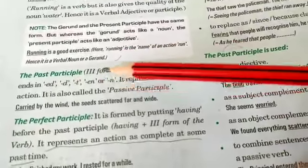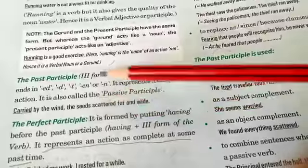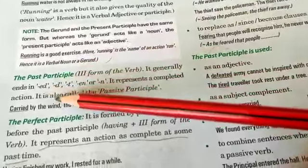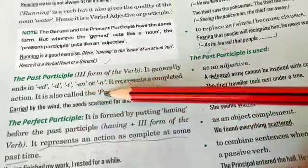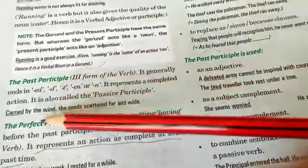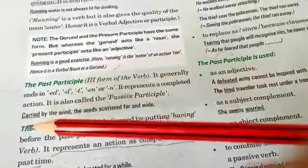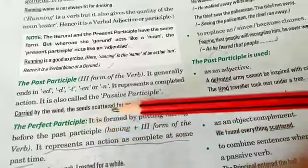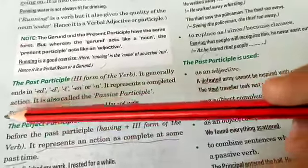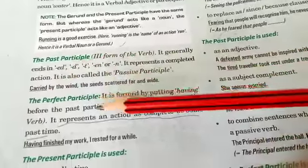The past participle is the second kind, which is the third form of the verb. It generally ends with -ed, -en, or -n, and it talks about a completed action — that is why it is also called the passive participle. For example, 'carried by the wind, the seeds spread far and wide' — 'carried' is the third form of the verb, the past participle.